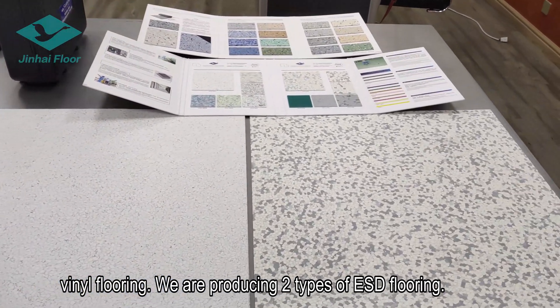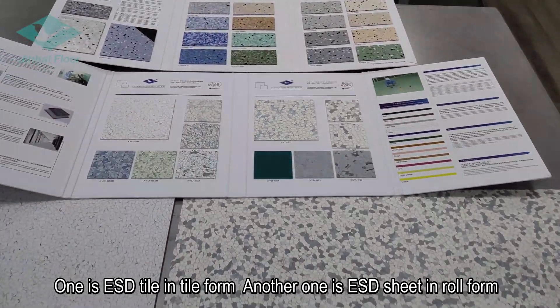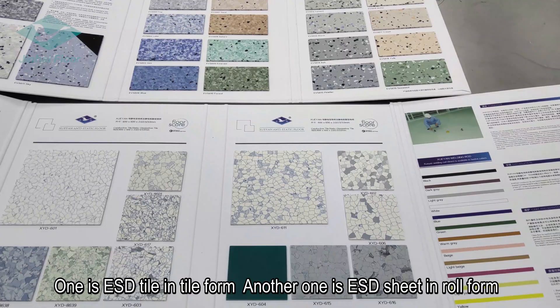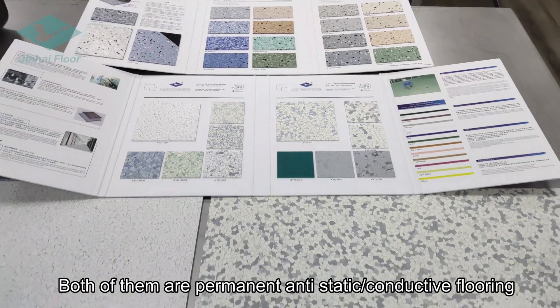We are producing two types of ESD flooring. One is ESD tile in tile form. Another one is ESD sheet in roll form. Both of them are permanent anti-static or conductive flooring.